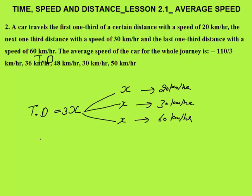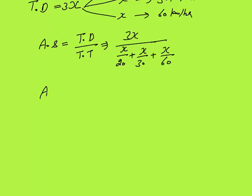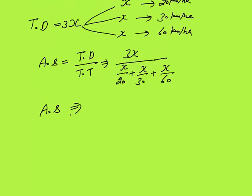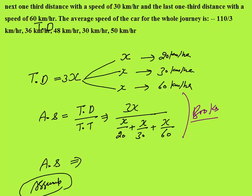The conceptual method gives average speed = total distance ÷ total time = 3x ÷ (x/20 + x/30 + x/60). But in the exam I prefer the assumption method. Most books use this longer fractional method, but you don't need it. Instead, take x as a multiple of 20, 30, and 60.